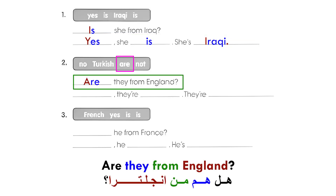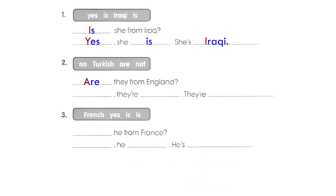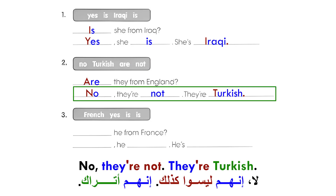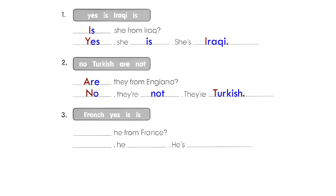2. Are they from England? هل هم من إنجلترا؟ No, they're not. They're Turkish. لا، إنهم ليسوا كذلك. إنهم أتراك.